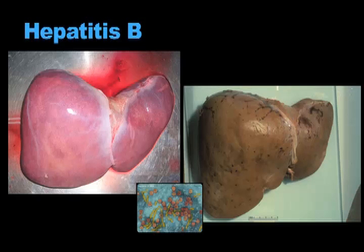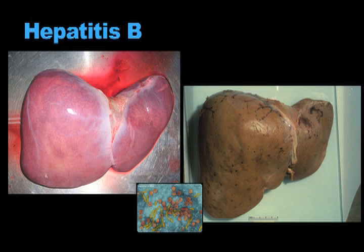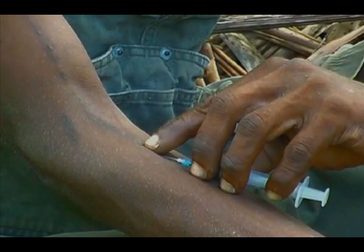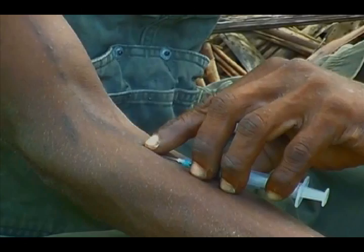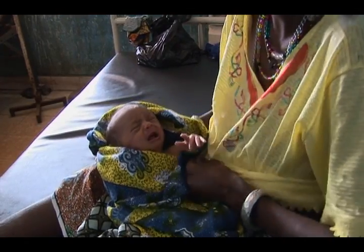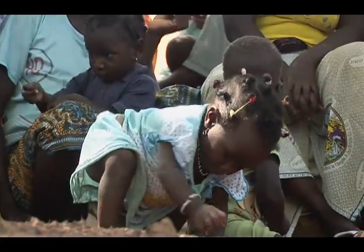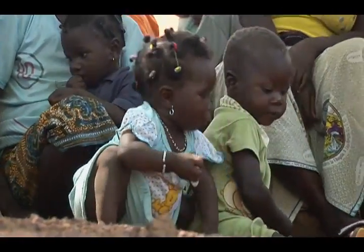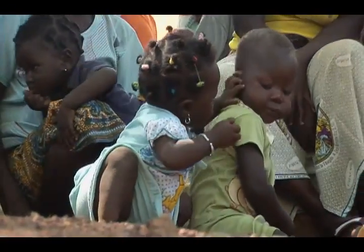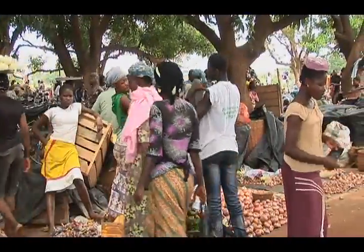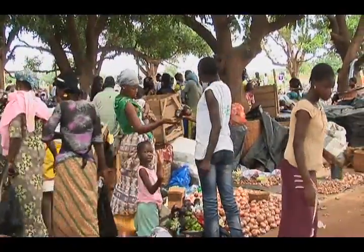Hepatitis B is caused by a virus that affects the liver. The virus is carried in the blood and other body fluids. It can be spread when a needle infected with the virus is shared with another person. It can also be transmitted to babies from infected mothers at birth or between children during social contact through cuts, scrapes, bites and scratches. A common way for transmission between adults is during sexual intercourse.